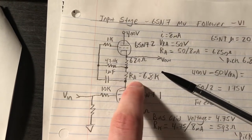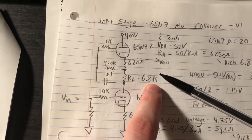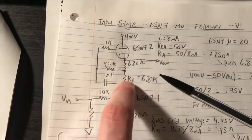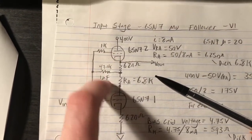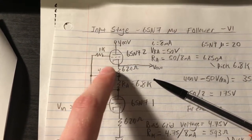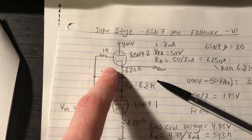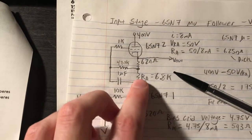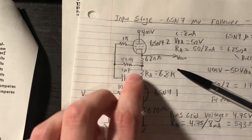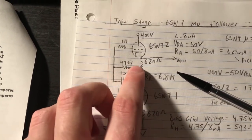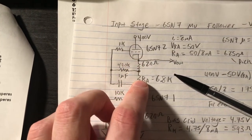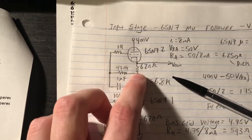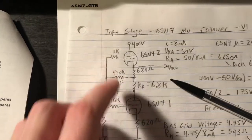It's like a standard common cathode amplifier, but we've got a really large resistor on the plate to the supply, and that's what this tube is doing. This RA value here, in this example 6.8K ohms, is essentially bootstrapped by the cathode follower action of this top amplifier or this top tube, and essentially makes that value appear much bigger.